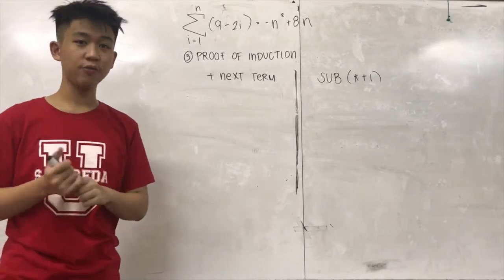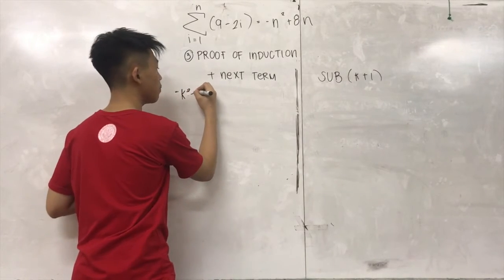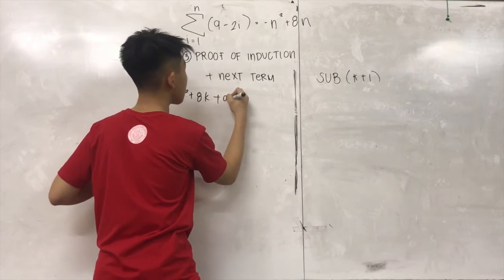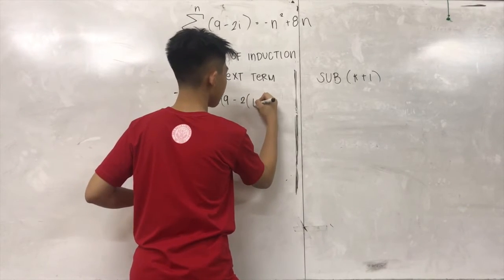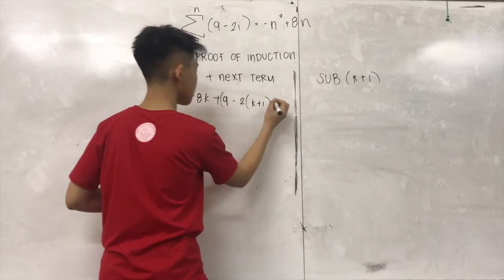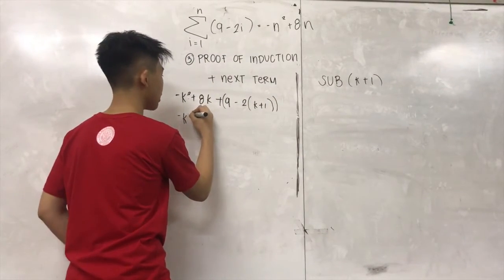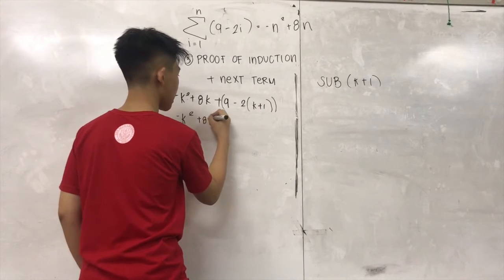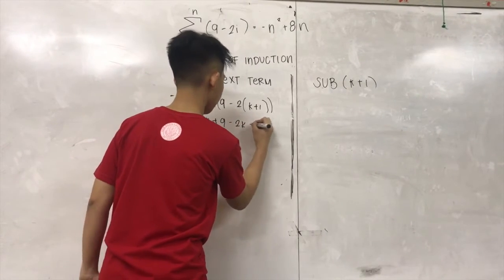So, we will start to the next term. So, negative K squared plus 8K plus 9 minus 2(K plus 1). So, we will just simplify the like terms. Negative K squared plus 8K plus 9 minus 2K minus 2.